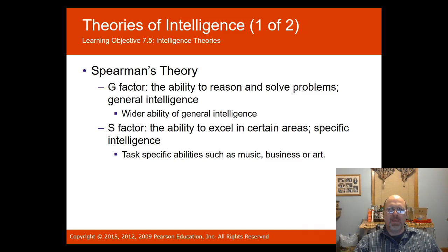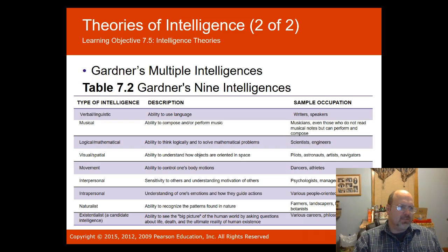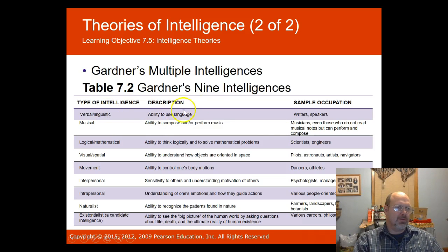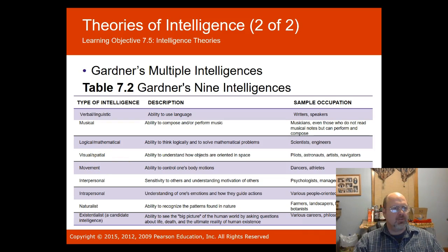Intelligence cannot be defined so simply, and thus Gardner proposed what's called multiple intelligences in 1988. There are nine of them. They include verbal-linguistic (ability to use language), musical (ability to compose and perform music), logical-mathematical (ability to think logically about mathematical problems), and visual-spatial intelligence (ability to understand how objects are oriented in space).